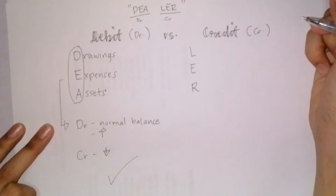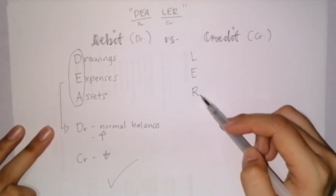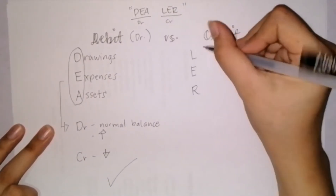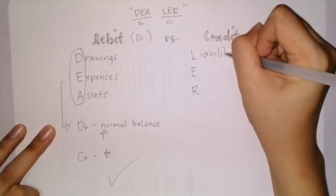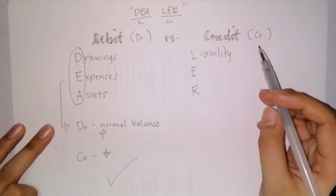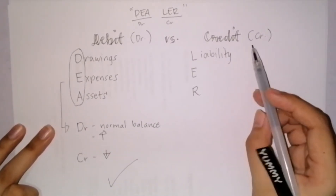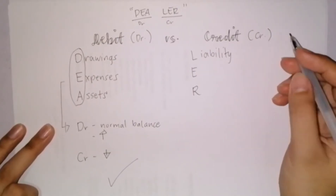Now let's go to credit. The acronym for credit is CR. Under credit are three accounts: L for liabilities, E for equity, and R for revenue. First is liabilities. Liabilities are present obligations of an entity to transfer an economic resource as a result of past events. When you incur a debt, we record a credit.